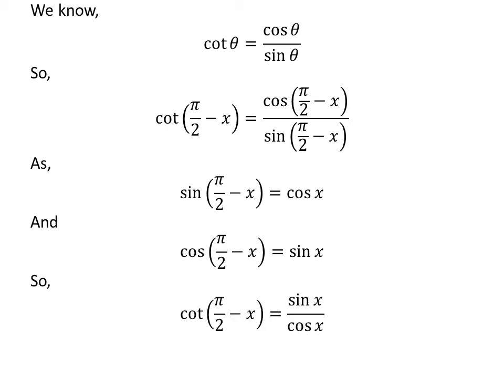Let us apply the above identities in the above expression of cotangent of half of pi minus x. So, cotangent of half of pi minus x is equal to sine of x upon cosine of x. We know sine of x upon cosine of x is equal to tangent of x. So, cotangent of half of pi minus x is equal to tangent of x.